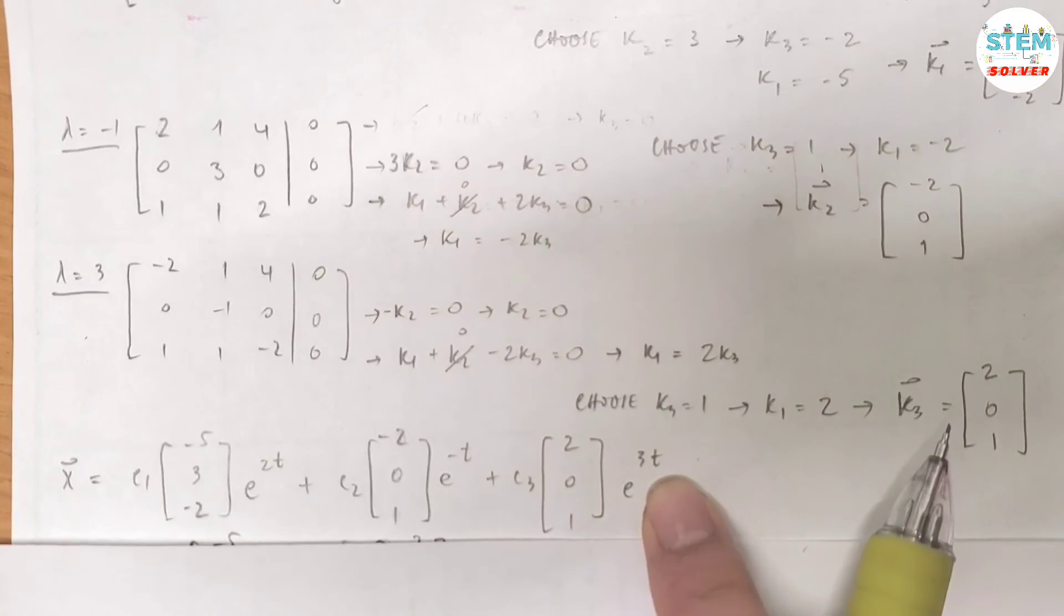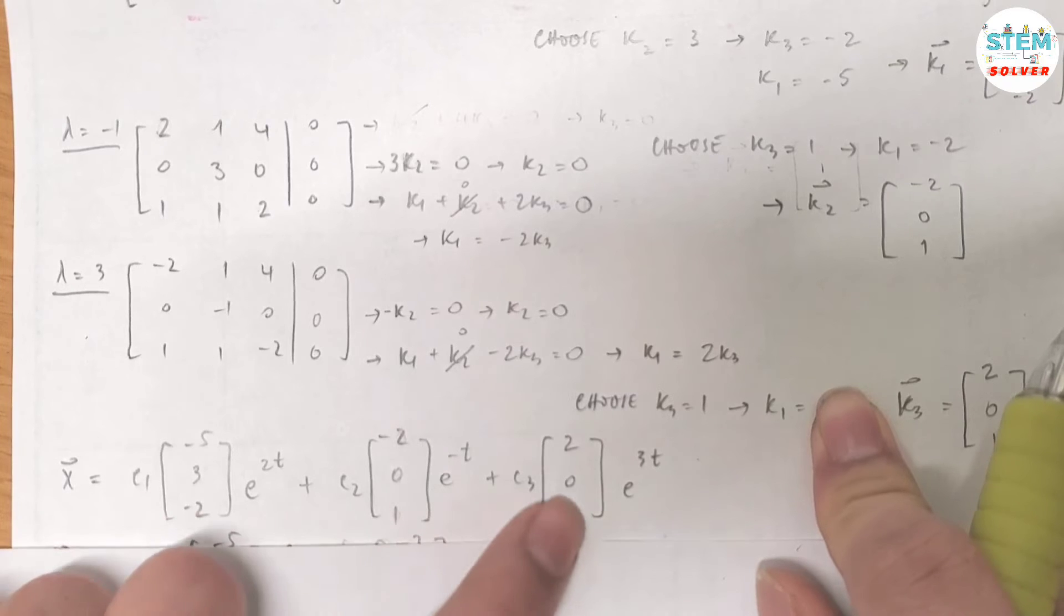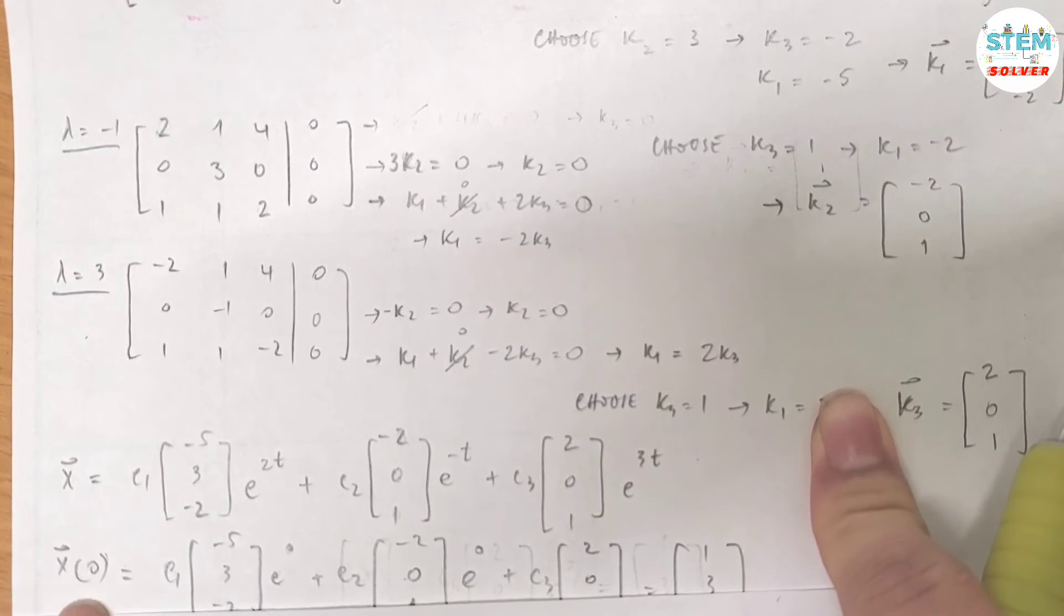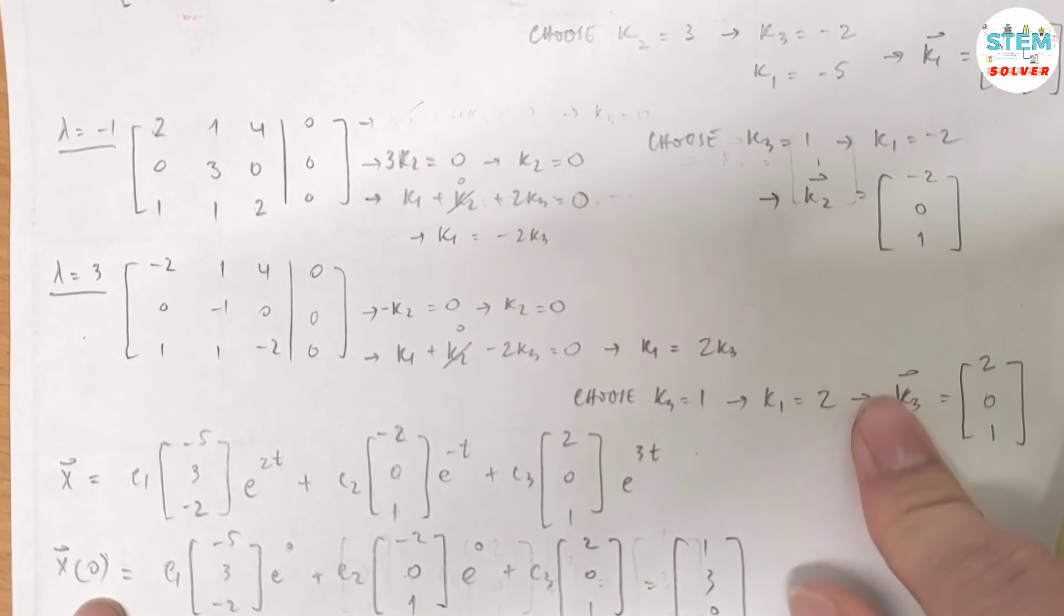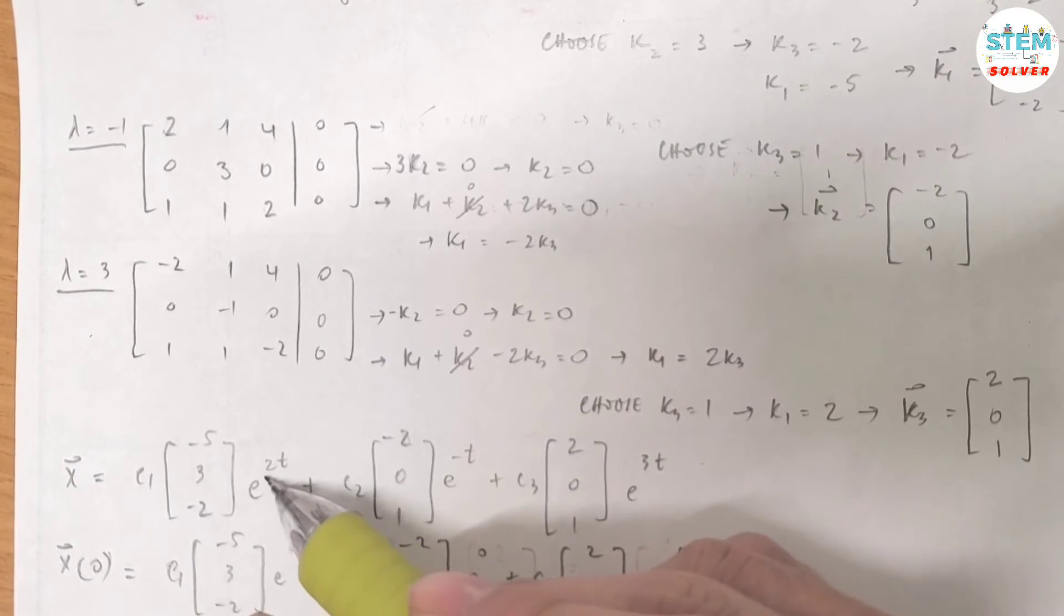How? Well, because you are given the vector x(0) equals [1, 3, 0], so plug in 0 for t. If I do that, I will have c₁ times this times 1 because e^0 which is 1. Similarly, you have c₂ this vector and e^0, c₃ this vector and e^0.